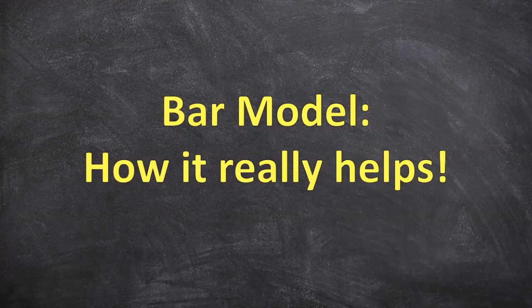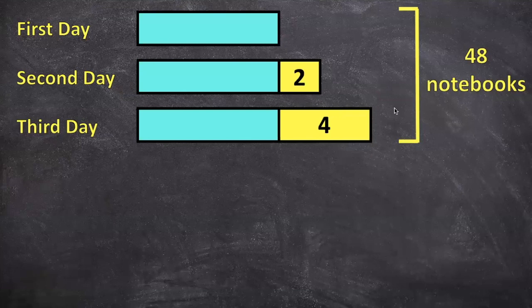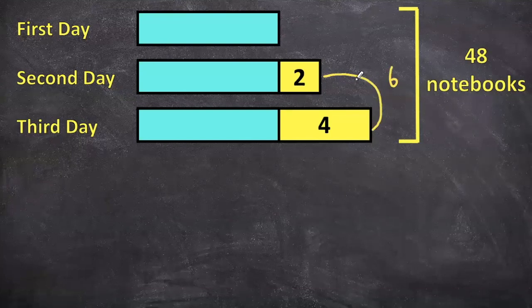But this is more the reason why the bar model is so important. Let's take a look. The bar model is so helpful because it provides a visual representation of how the problem is laid out, just using a picture reference, with no need to use fancy variables like X. We can see from these bars that after the second and third day he sold a total of six more notebooks compared to the first day, and if we take these six notebooks away, we notice that we have an equal number of notebooks for the three days.